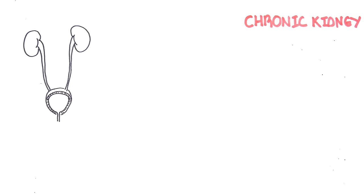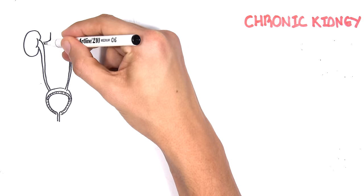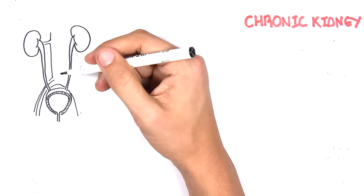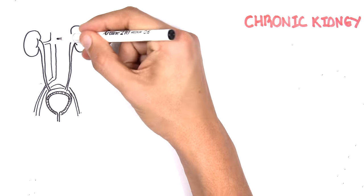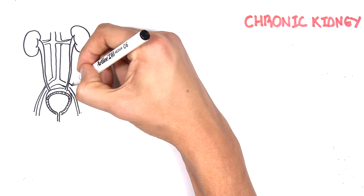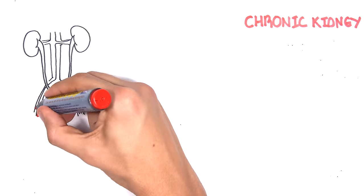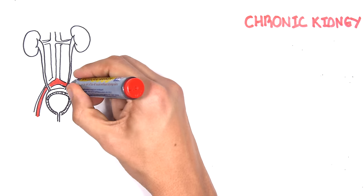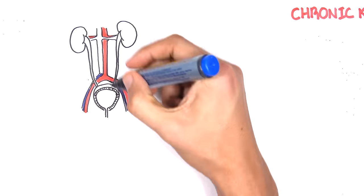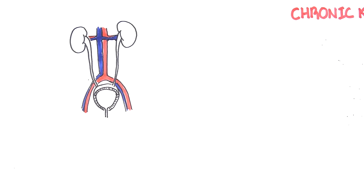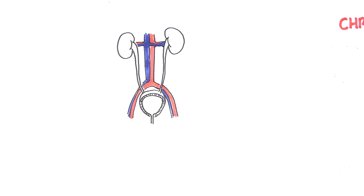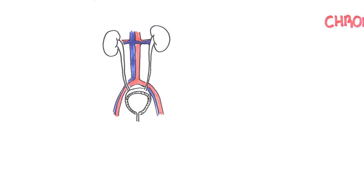Before we go into chronic kidney failure, let's just recap the anatomy slightly. Here I'm drawing the kidneys, which connect to the ureter and to the bladder. The bladder stores urine ready for micturition, and we also have the inferior vena cava and the descending aorta, which have vessels coming in and out from the kidneys.